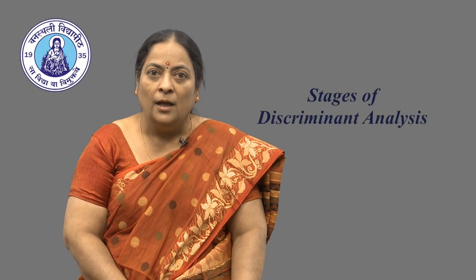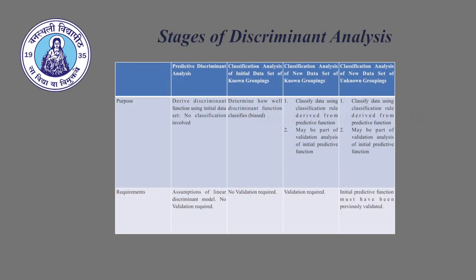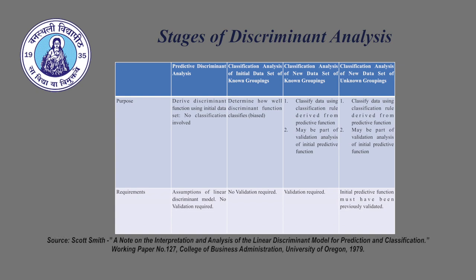The stages of discriminant analysis include: predictive discriminant analysis using the initial data set of known categories — the purpose is to derive the discriminant function with no classification involved; classification analysis of new data with known grouping — to determine how well the discriminant function classifies, which may be part of a validation analysis; and classification analysis of new data with unknown grouping — to classify data using the classification rule derived from the predictive function. Assumptions of the linear discriminant model apply throughout, and validation is not always required.